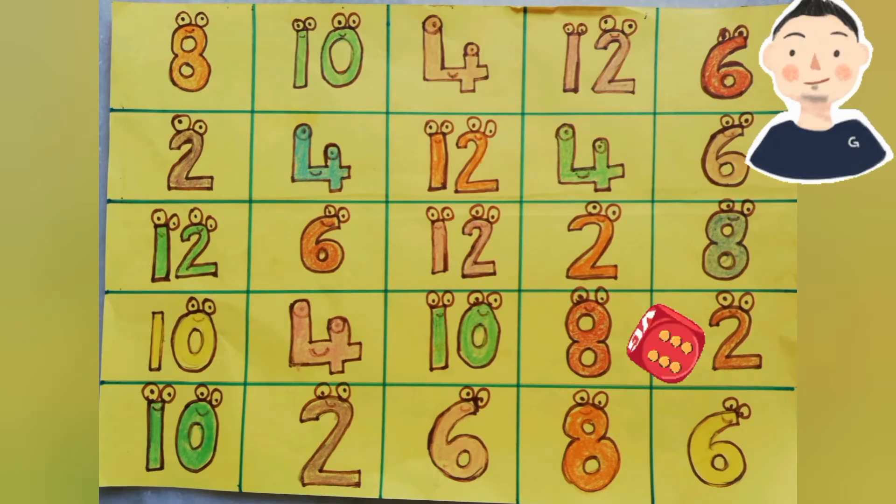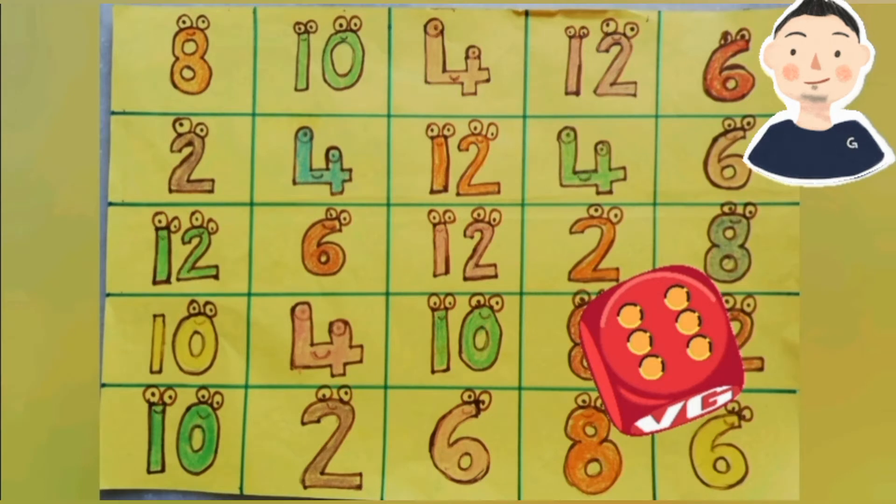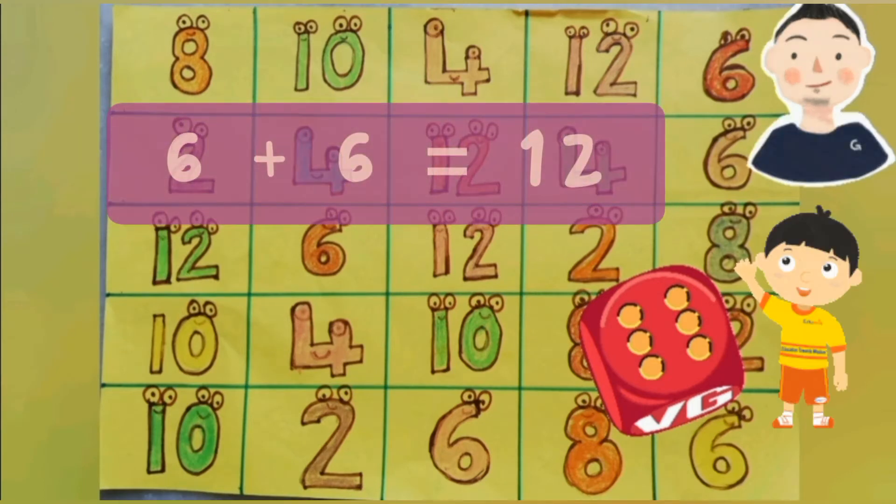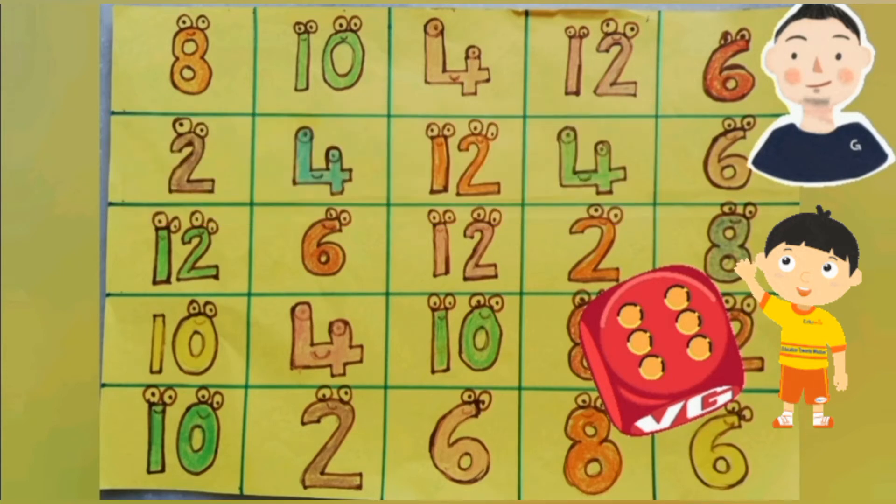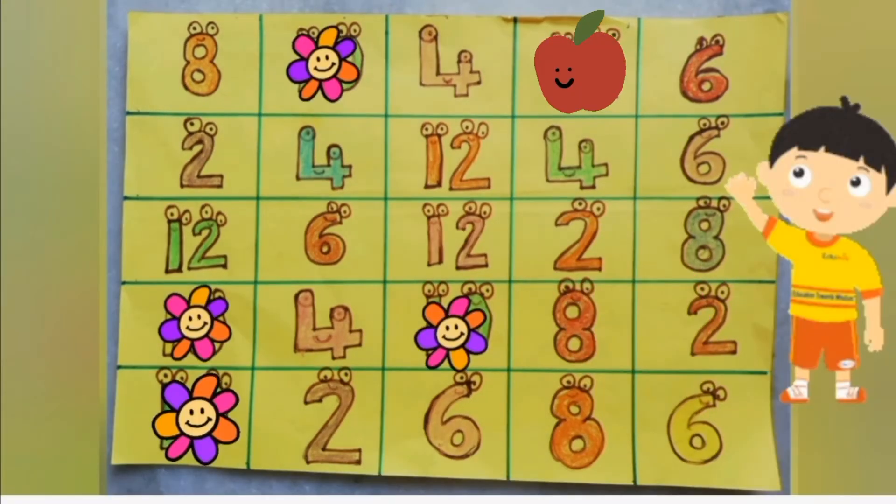My turn. It's six. Can you tell me please, double of six? I know double of six. We add six plus six, that is twelve. Can you please mark all the twelves that you see on the board?